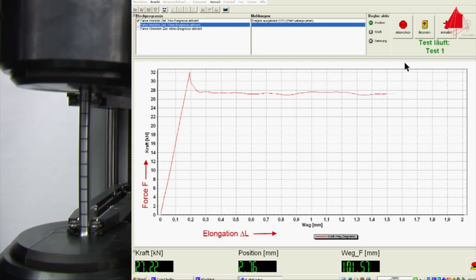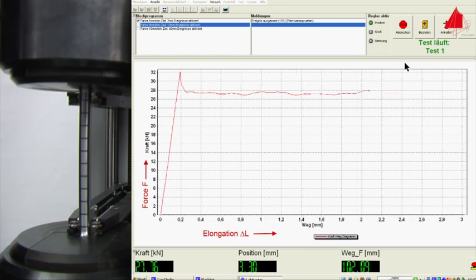In the next stage of the tensile test, an almost constant force level with slight fluctuations occurs. This phenomenon is called the Lüders effect.